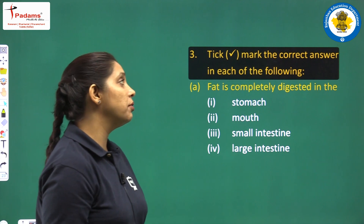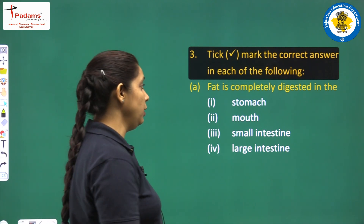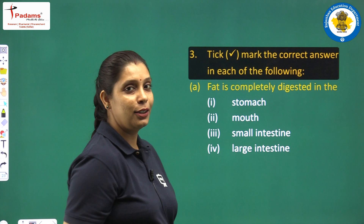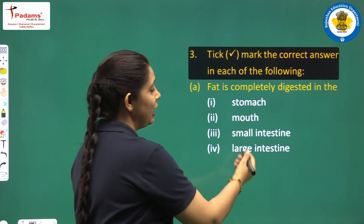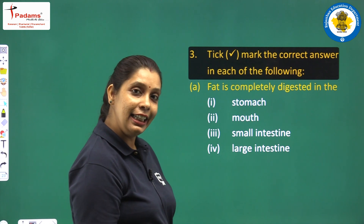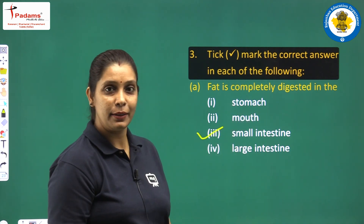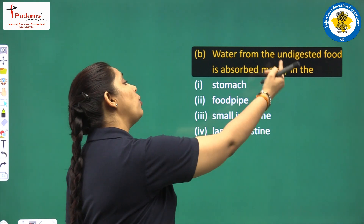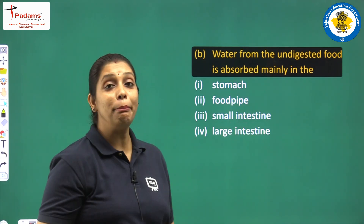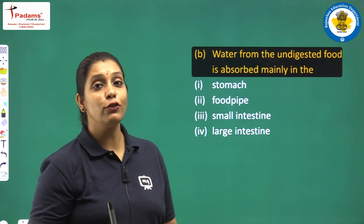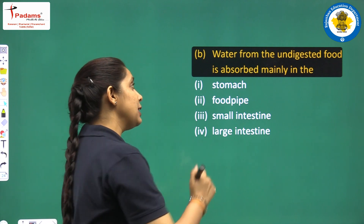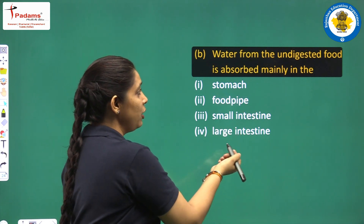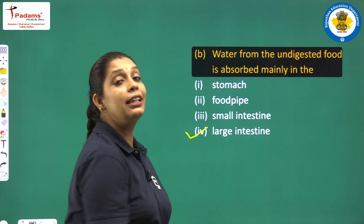Tick mark the correct answer. Fat is completely digested in the stomach, mouth, small intestine, or large intestine? It is digested in the small intestine. Next: water from the undigested food is absorbed mainly in which intestine? All food absorption happens in the small intestine, but water absorption — is it the small intestine or large intestine? Large intestine is the correct answer.